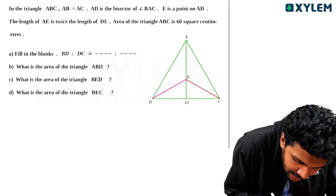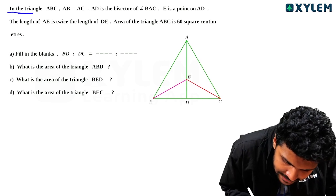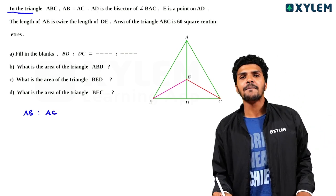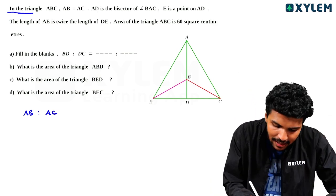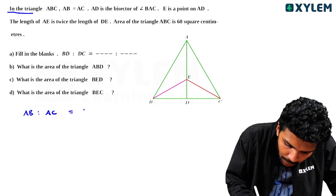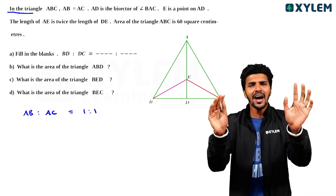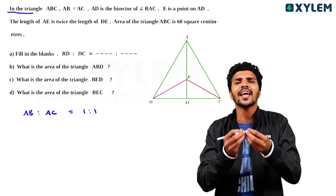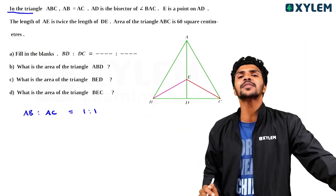This question: this Triangle ABC, AB is equal to AC. AB and AC are equal, and the ratio is 1 is to 1. That's why you have to say that the quantities are equal, and the ratio is 1 is to 1.